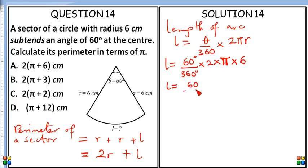60 over 360 times 2 times π times 6. This goes here, that's 6, and 6 eventually cancels 6. L is going to be equal to 2π centimeters.